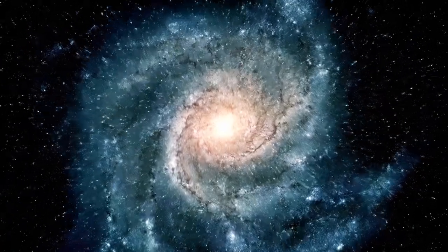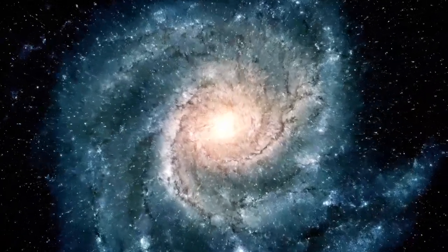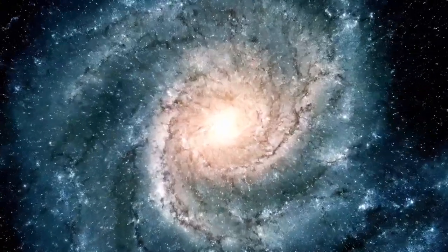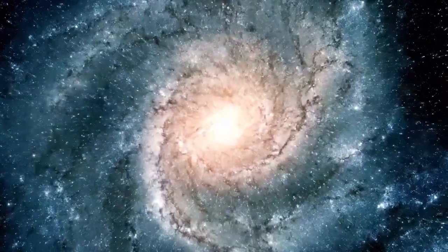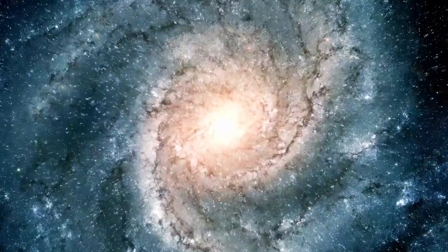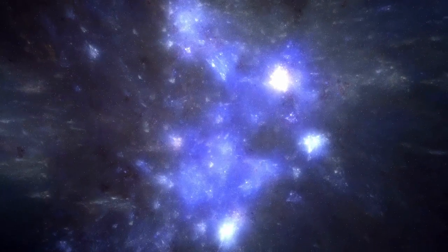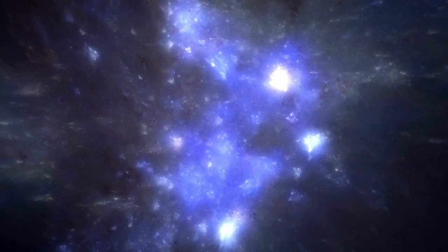Spiral galaxies, such as the Milky Way, display a central bulge surrounded by spiral arms containing a mix of young and old stars along with interstellar matter. Irregular galaxies have an irregular and chaotic shape, often resulting from interactions or mergers between other galaxies.